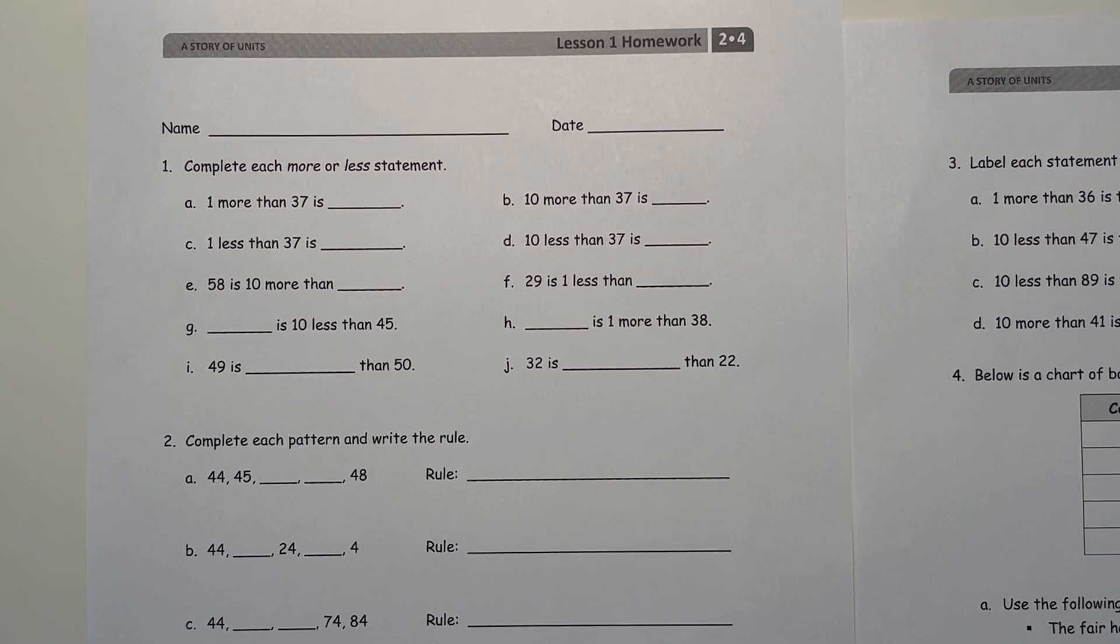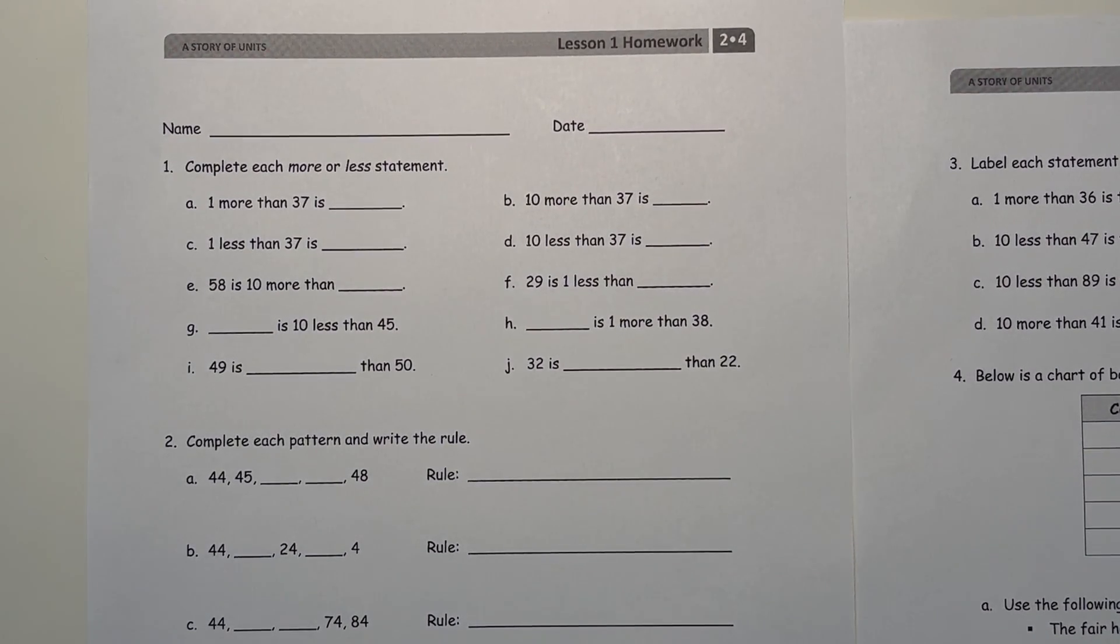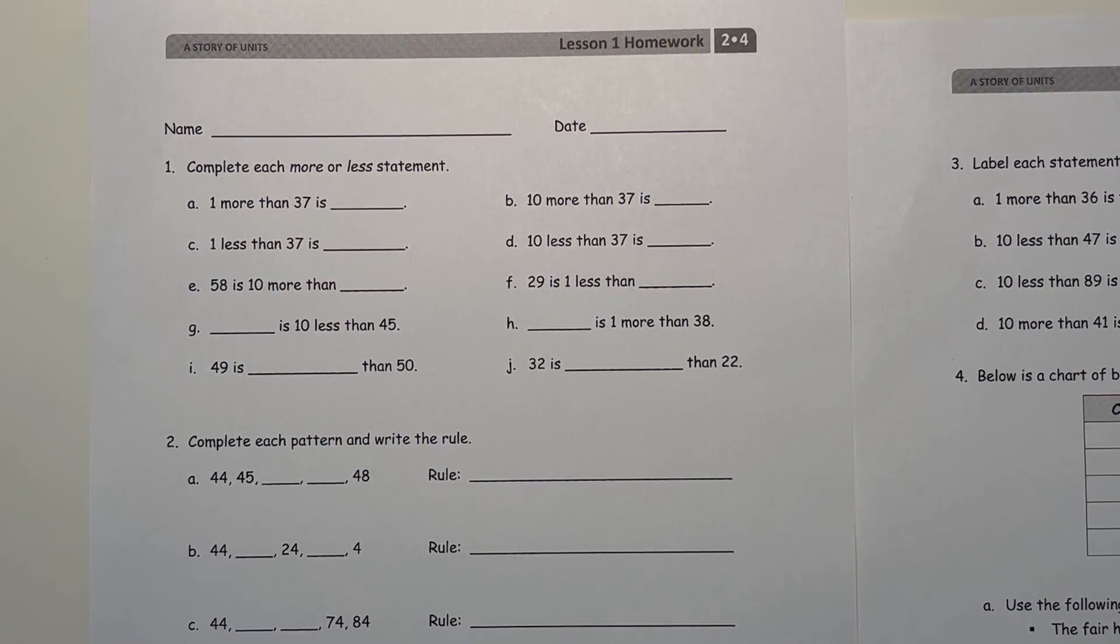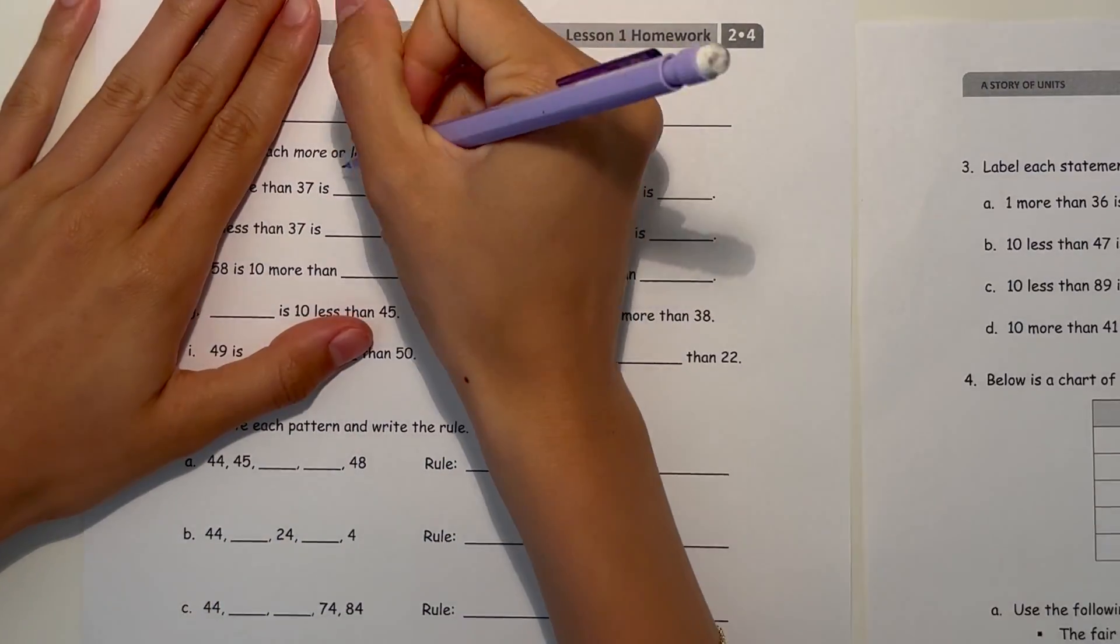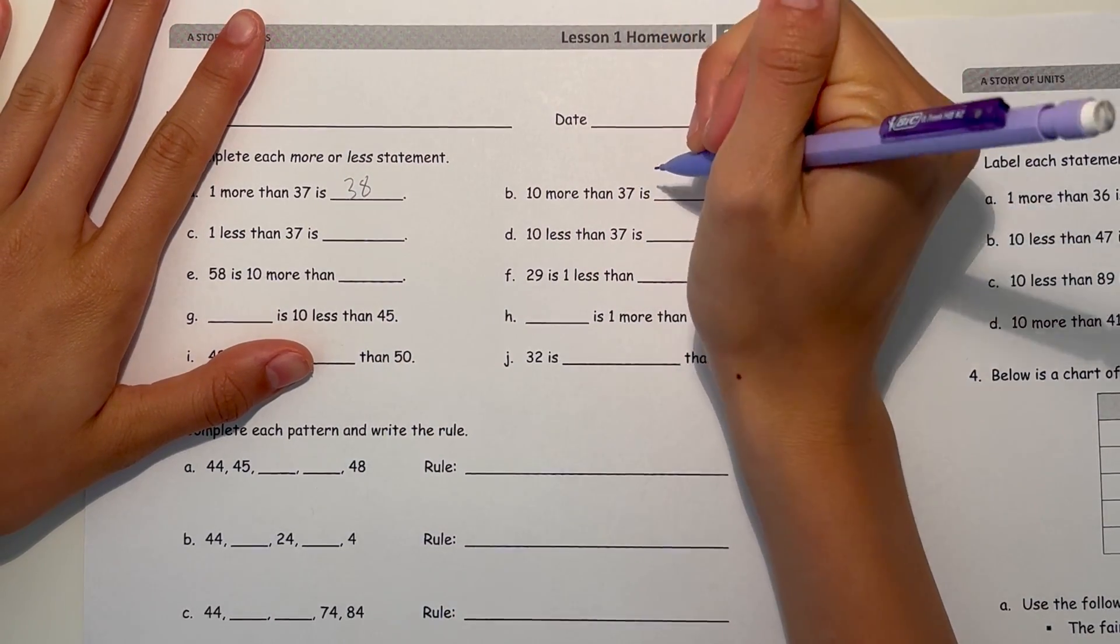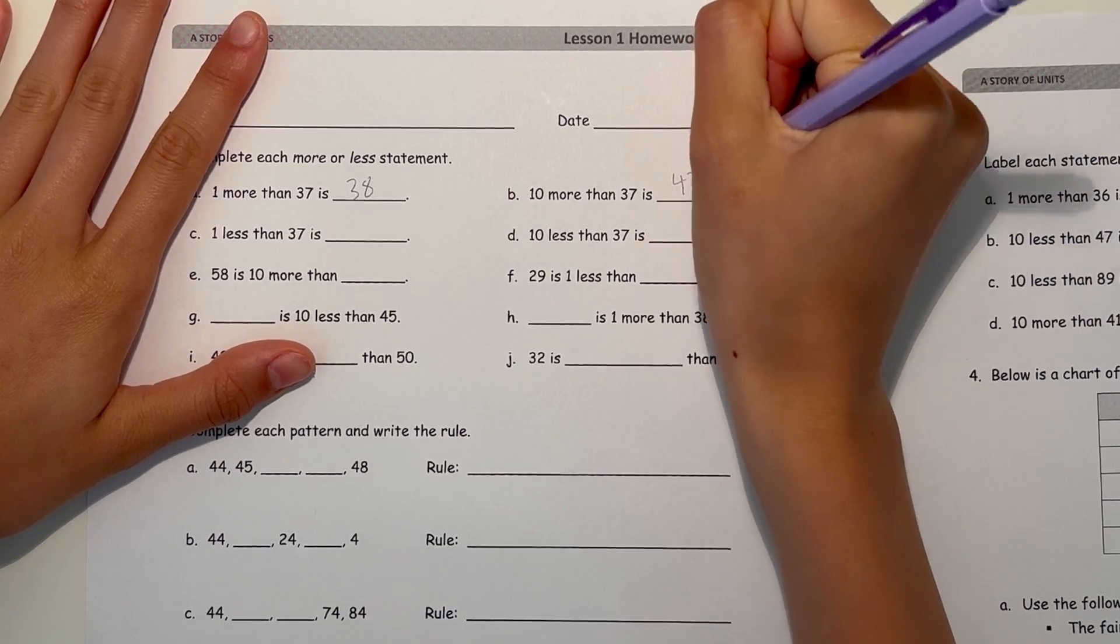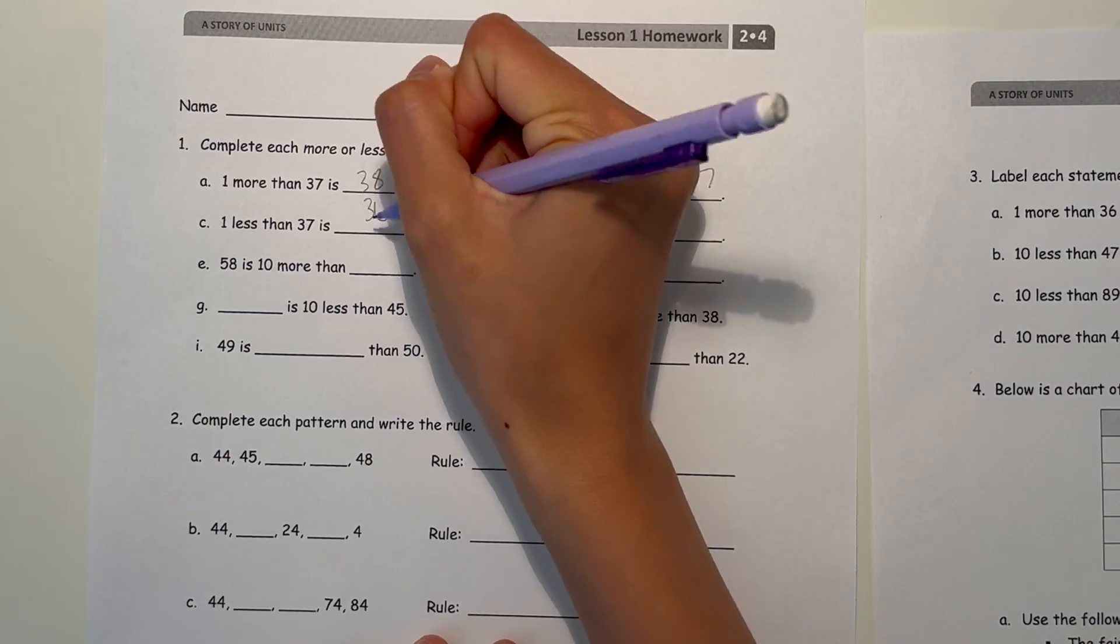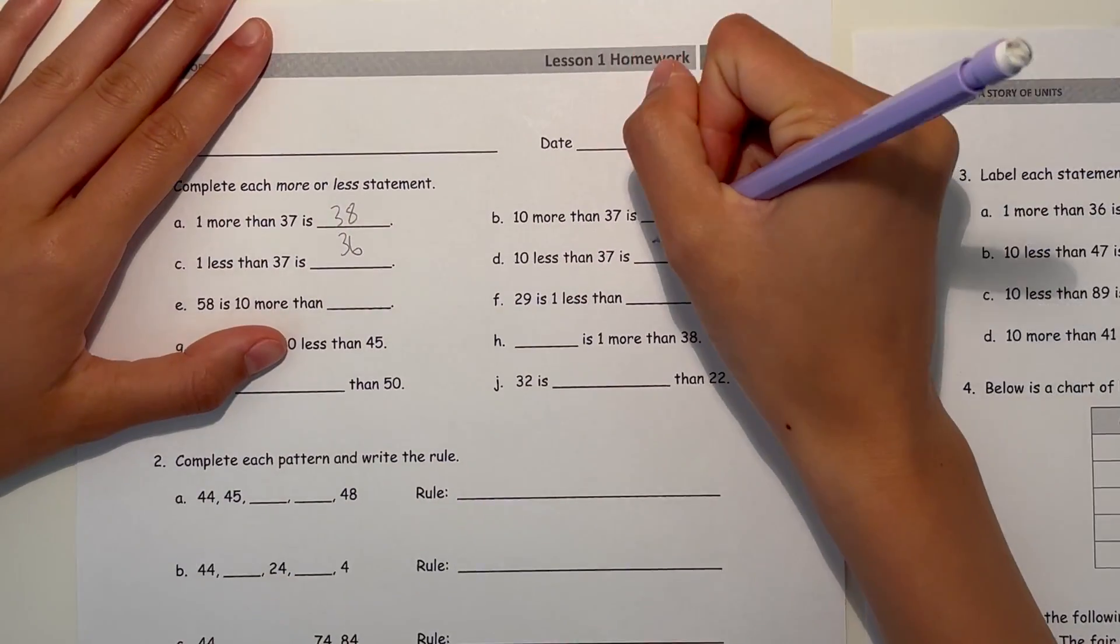Okay, number one, complete each more than or less than statement. So first we have a, one more than 37 is blank. So one more than 37, the next number up, which is 38. 10 more than 37, then that's 47. One less than 37, then we go down to 36. 10 less than 37 is 27.